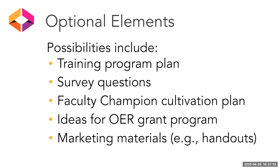You can also include optional elements in your plan — this is totally up to you. Possibilities could include a training program plan, survey questions for either students or faculty, a faculty champion cultivation plan, ideas for incentives or awards, ideas for an OER grant program, marketing materials like handouts, brochures, lib guides, or other things that you haven't yet developed.